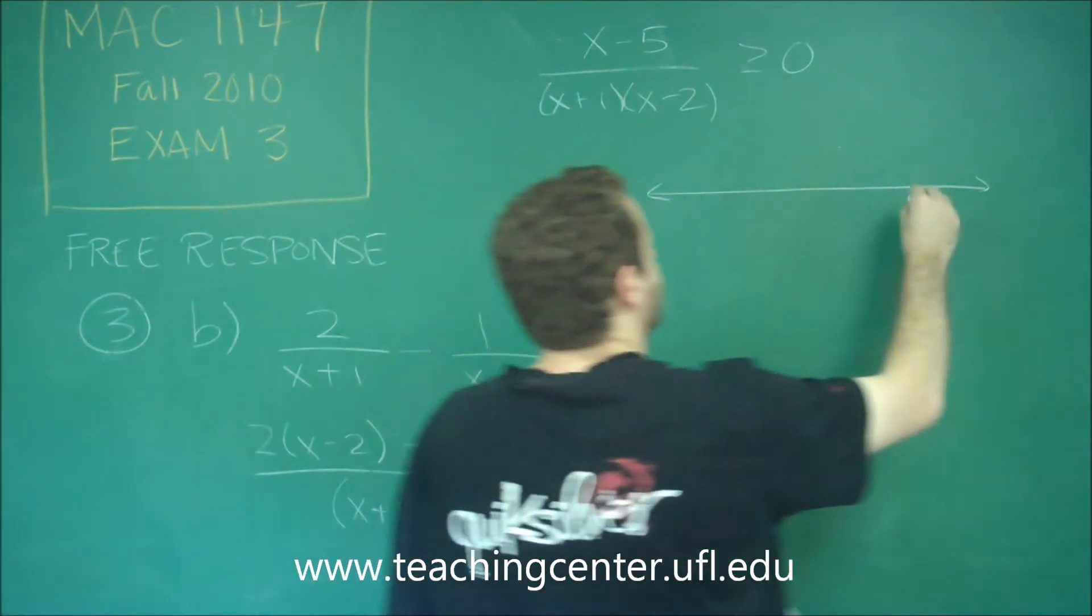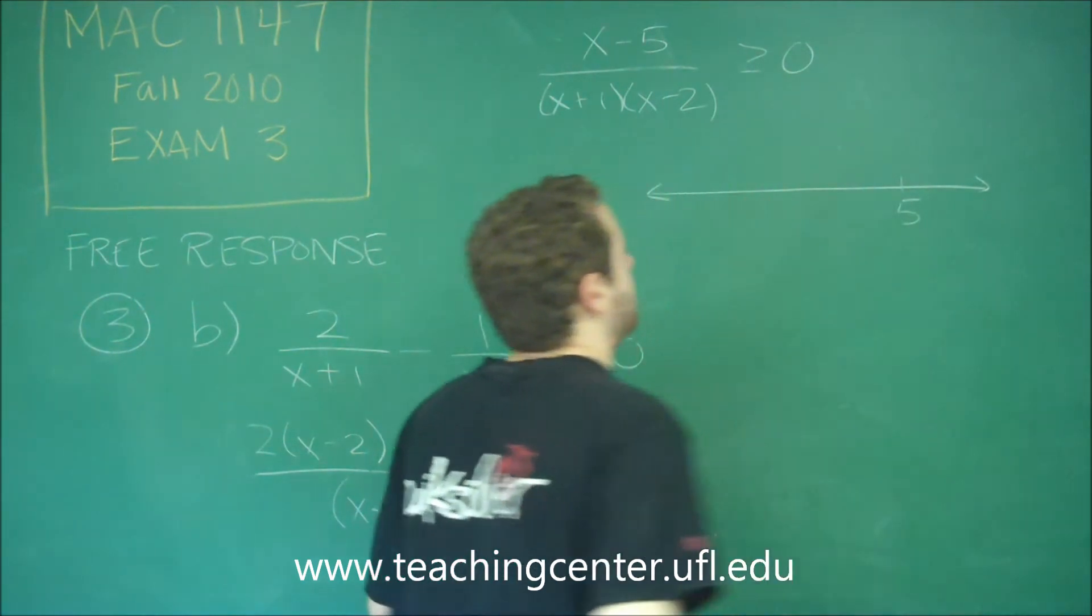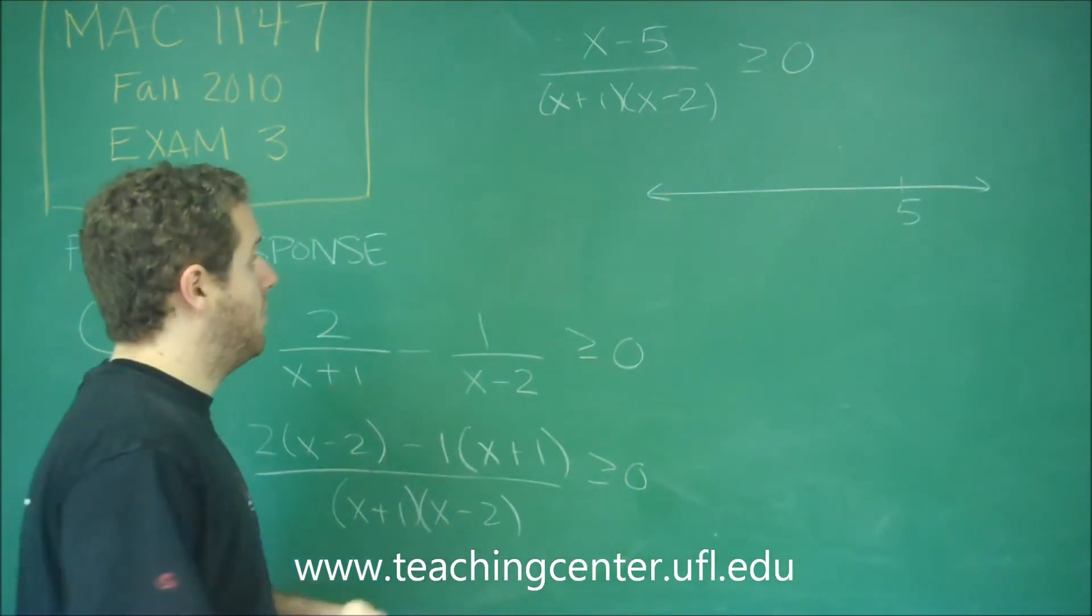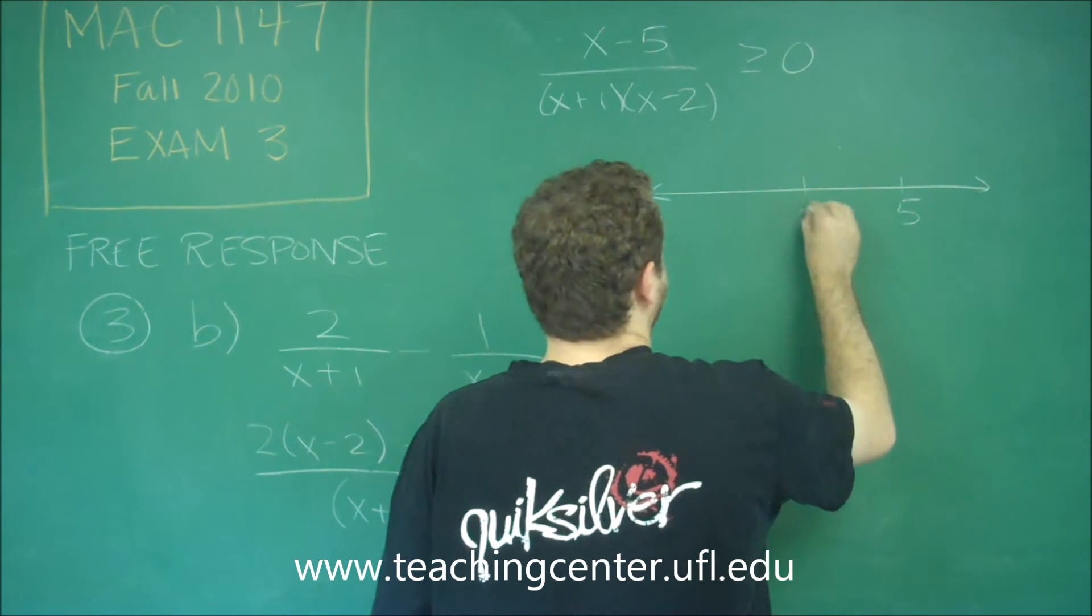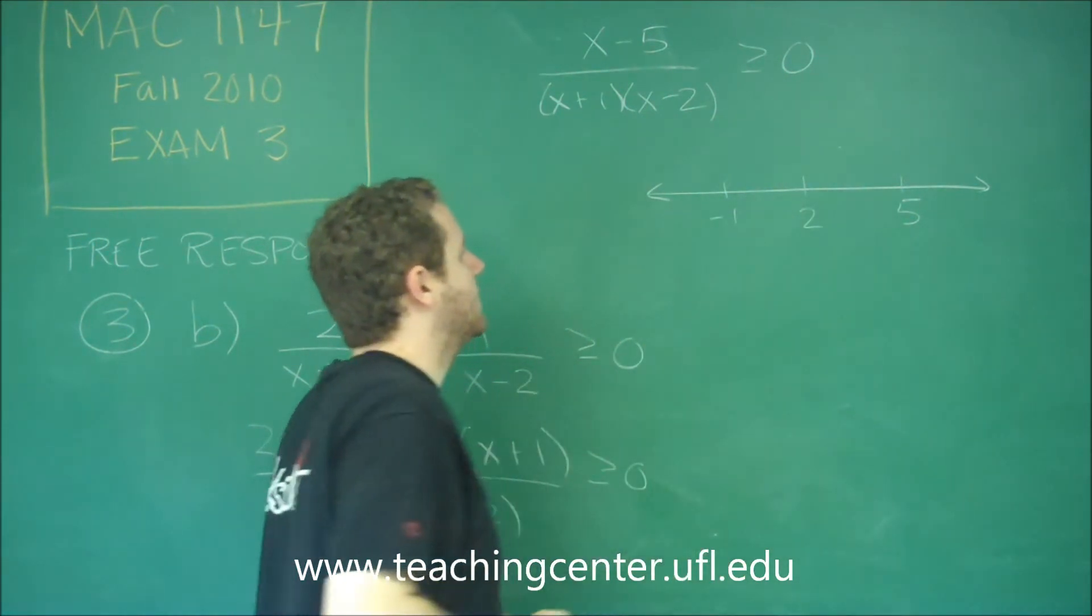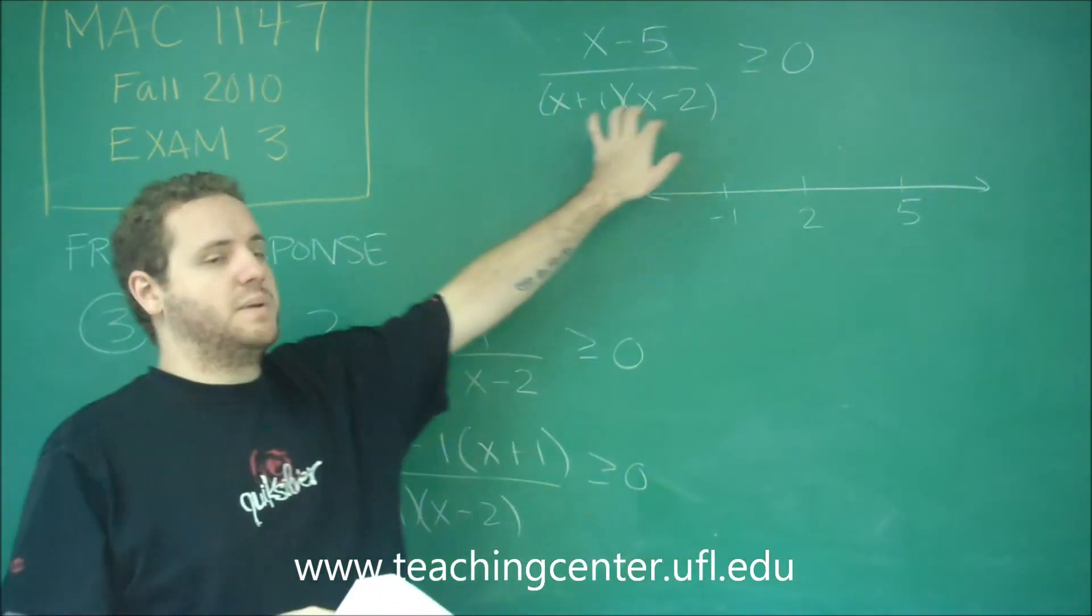So from the top we have 5. That would mean the top 0. And on the bottom we have 2 and negative 1, as are 2 numbers that can make the bottom 0.